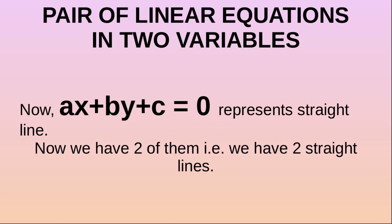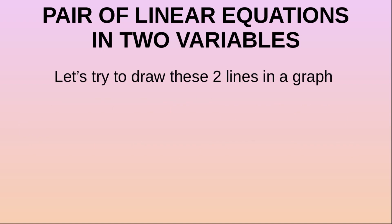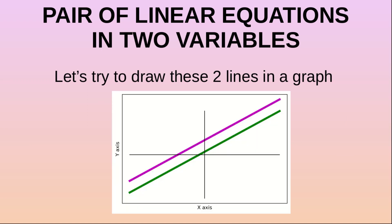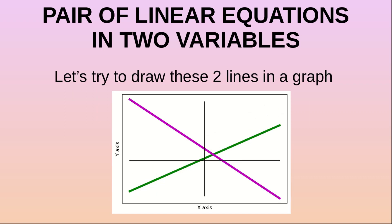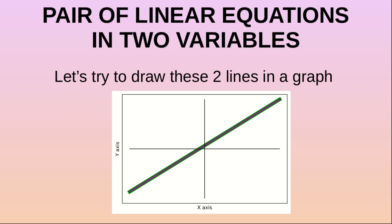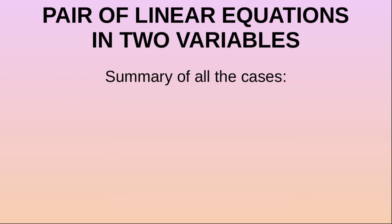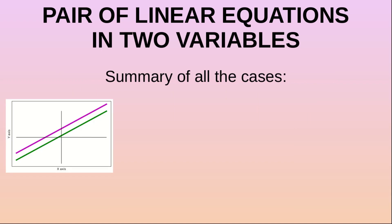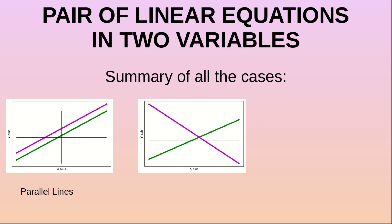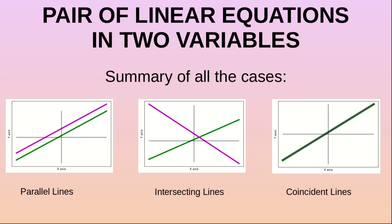Now we have a pair of linear equations, so we have two of them — basically two straight lines. If we draw these two lines on a graph, we can have the following cases: both lines can be parallel to each other; or the lines may intersect each other at a single point; or one line may lie exactly above another. These are known as parallel lines, intersecting lines, and coincident lines respectively.